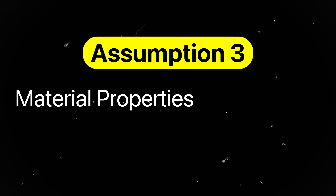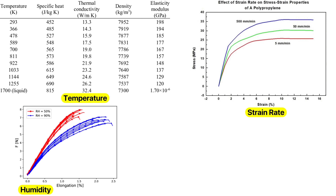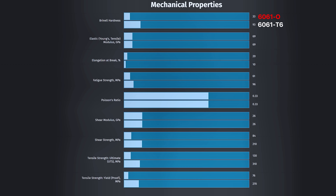Assumption number three is material properties are constant. A steel bar might have a yield strength of 250 megapascals in a datasheet, but what about at 300 degrees Celsius under high impact loading? Material properties vary significantly with temperature, strain rate, humidity, and even the direction of loading — aka anisotropy. Properties must be validated for the operating conditions, or you might underestimate the risk or design with the wrong values. Even the material properties of the same alloy can vary based on grain size, heat treatment, or impurities. For example, 6061-T6 aluminum has very different properties from 6061-O aluminum.